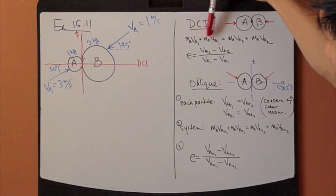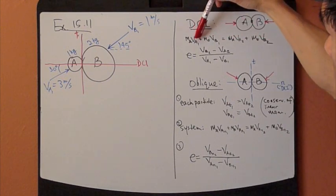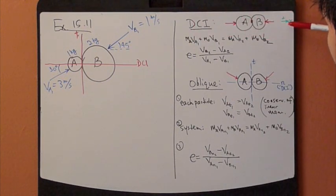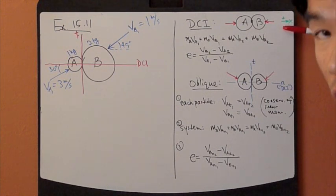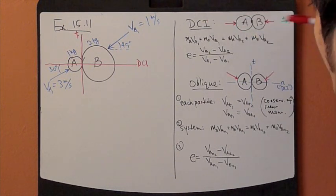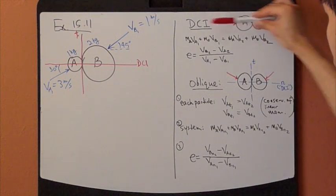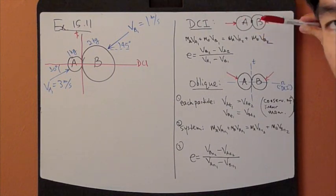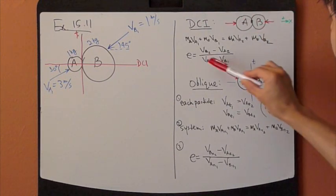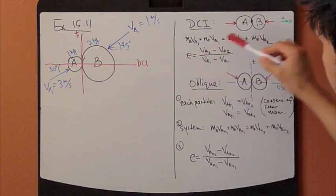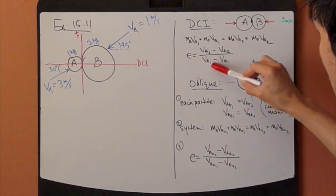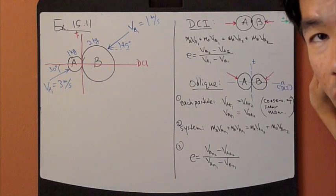For the conservation of linear momentum, you apply that in the direct central impact direction, which is this direction right here. It's very straightforward. For the coefficient of restitution, just plug in the velocity and you get done with it.